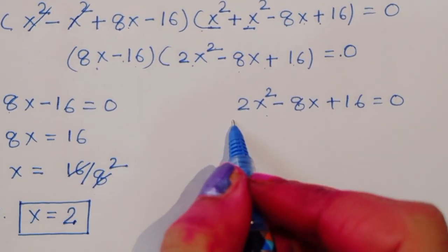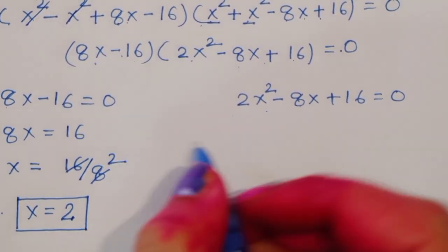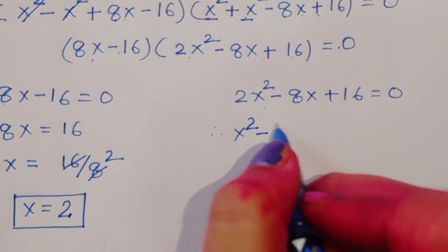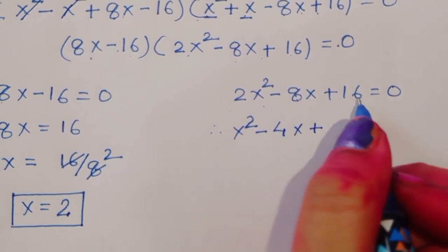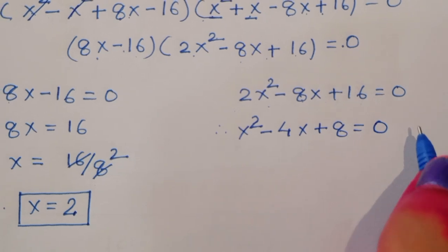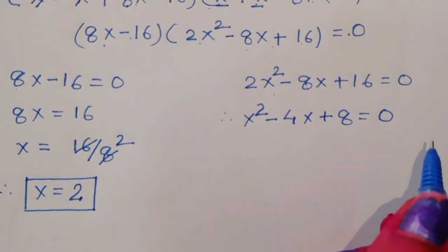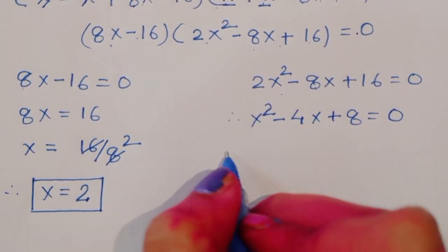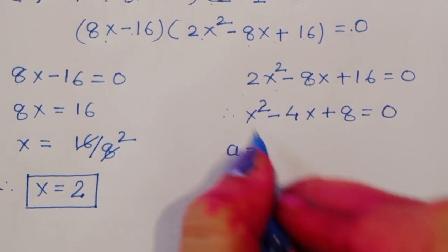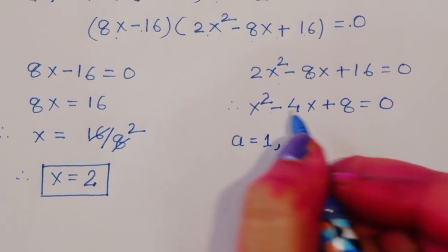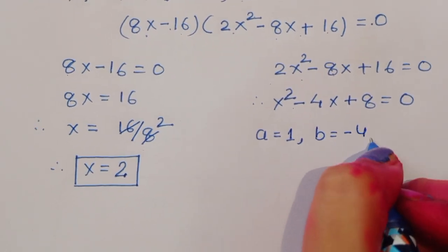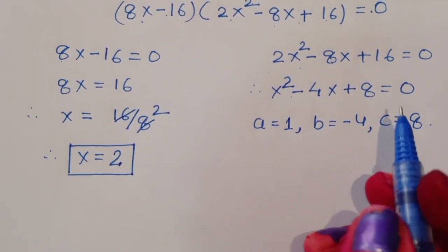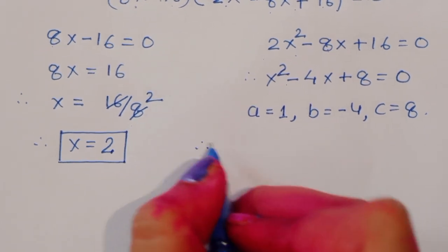Taking the second factor: 2x² - 8x + 16 = 0. Dividing both sides by 2: x² - 4x + 8 = 0. Now we identify coefficients: a = 1, b = -4, c = 8.